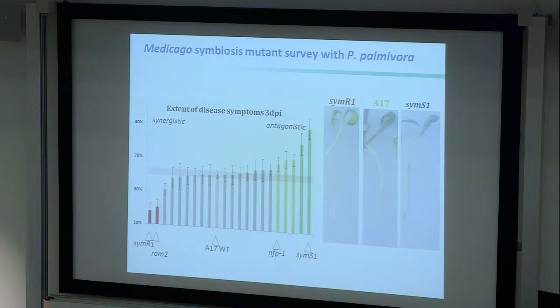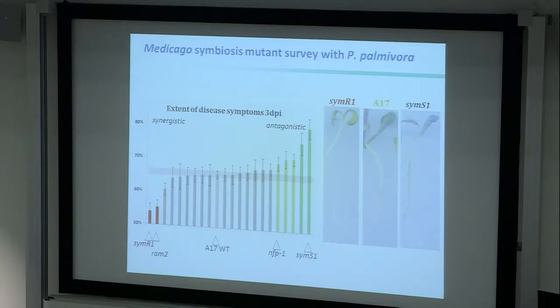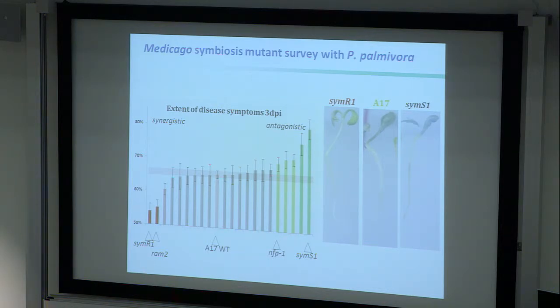All of these are symbiosis mutants — they no longer form symbiosis — and some have no effect on the pathogen. The wild type is the reference. Some mutants actually have a promoting effect: even though no symbiont is allowed into the root, these plants are now much more susceptible to pathogens — an antagonistic effect. One interesting example is NFP, the Nod-factor receptor required for nodulation signal perception in legumes; without it, the plant becomes slightly more susceptible to pathogens.